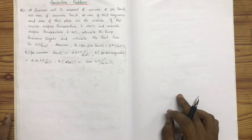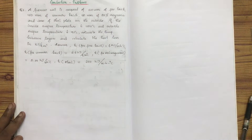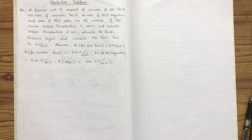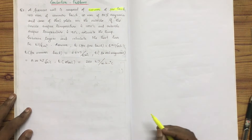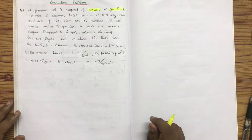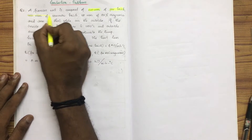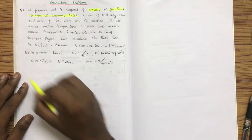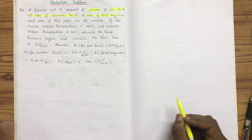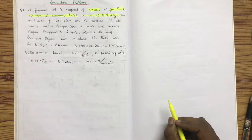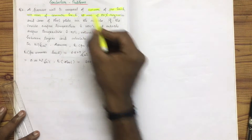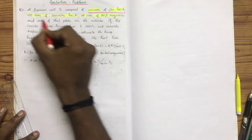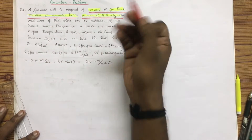The furnace wall is composed of 220mm of fire brick. The fire brick is composed of three materials: 220mm of fire brick, 50mm of common brick, and 50mm of magnesium.